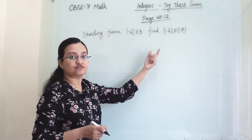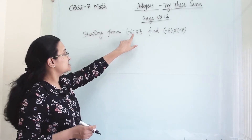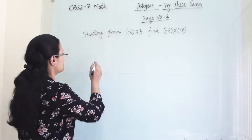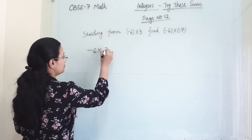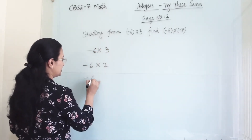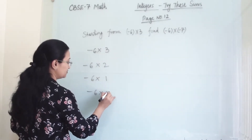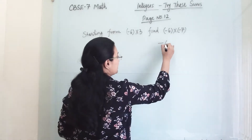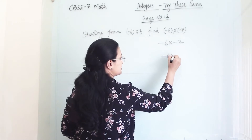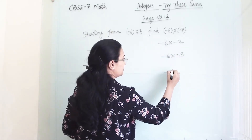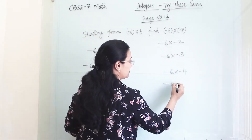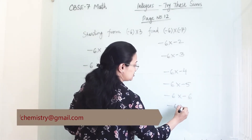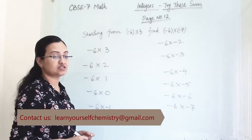The second problem is solved the same way as the earlier one. Starting from (-6) × 3, we have to find till (-6) × (-7). The sequence is: (-6) × 3, (-6) × 2, (-6) × 1, (-6) × 0. After this, (-6) × (-1), (-6) × (-2), (-6) × (-3), (-6) × (-4), and the last one is (-6) × (-7).